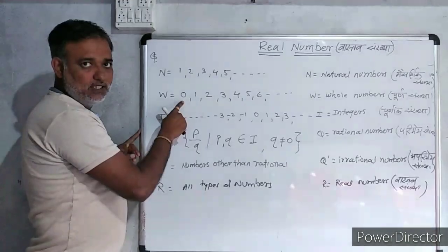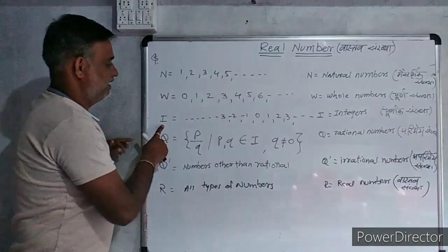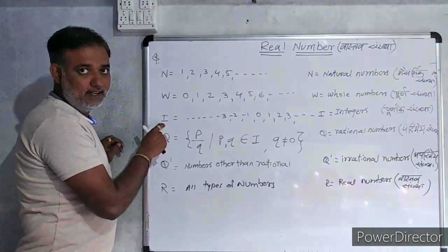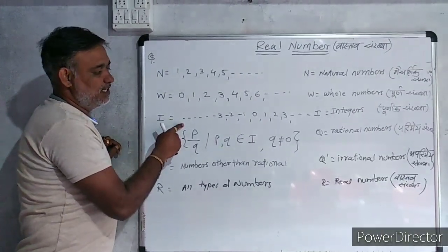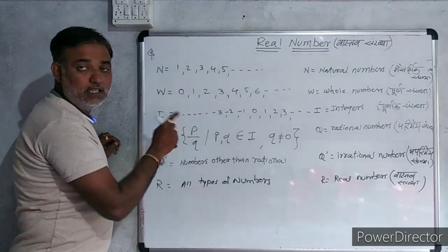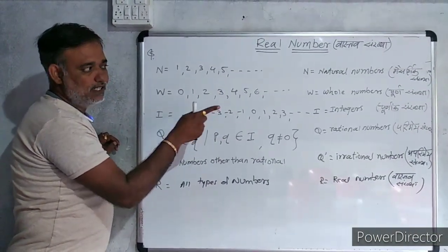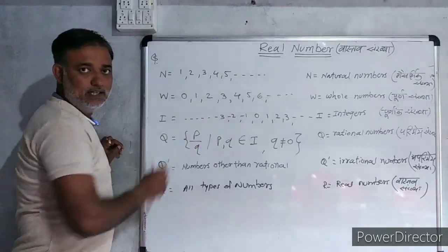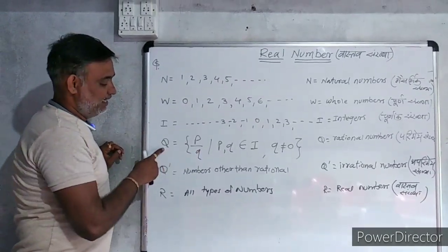Then Integers, represented by the alphabet capital I. Integers are the numbers, all negative and positive numbers, including 0.